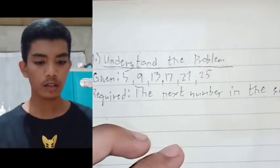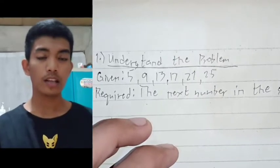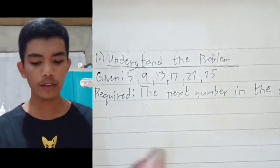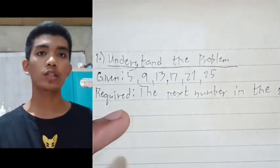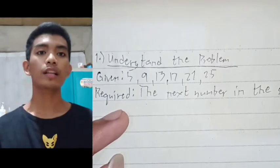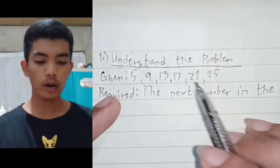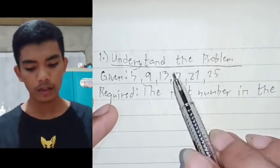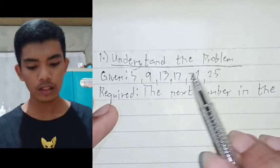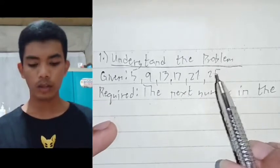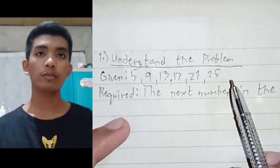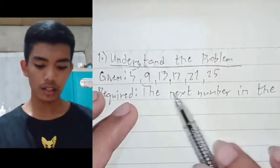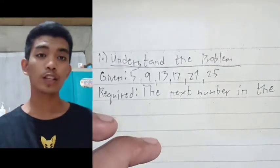I have right here a sheet of paper that I will be using in order to properly explain this problem. I have written here already the first step, which is to understand the problem. What I did here is I wrote the given information from the problem, which are 5, 9, 13, 17, 21, and 25, and the required information or the missing information is the next number in this sequence.